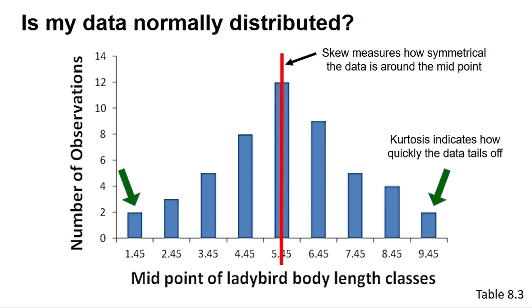We can also calculate a kurtosis value. In a normally distributed data set, the data tails off from the central position in a defined way. The kurtosis value can indicate if your data tails off too quickly or slowly. A kurtosis value between minus 2 and 2 can be consistent with a normally distributed data set. Using these three measures, we can at least give some justification for using a parametric test to analyse our data.